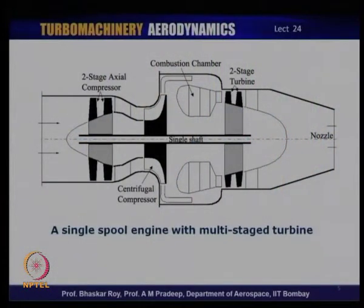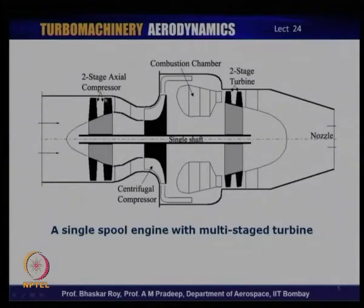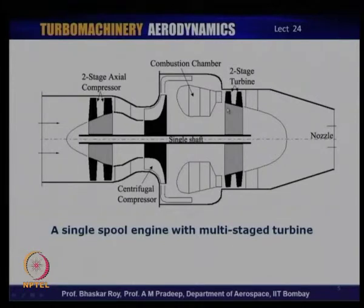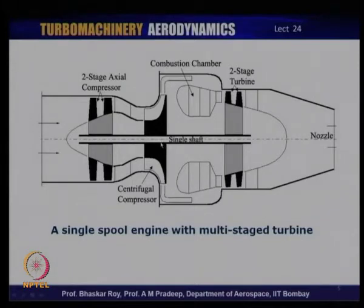Let us look at some standard engines. What we see first is a single-spool engine with a multi-stage turbine — one spool on which both compressors and turbines are mounted. The compressor consists of a two-stage axial compressor and then a single-stage centrifugal compressor, delivering to the combustion chamber, which delivers to a two-stage turbine configuration — but both stages are mounted on a single shaft or spool.